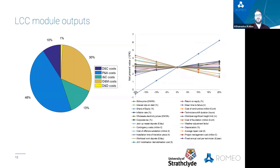To give you an idea of the types of outputs, here we can see the breakdown of life cycle costs based on the different phases of a project's development, as well as the sensitivity analysis of key input variables illustrating the ones having higher impact to the KPIs of interest, which in this case was selected to be the net present value.